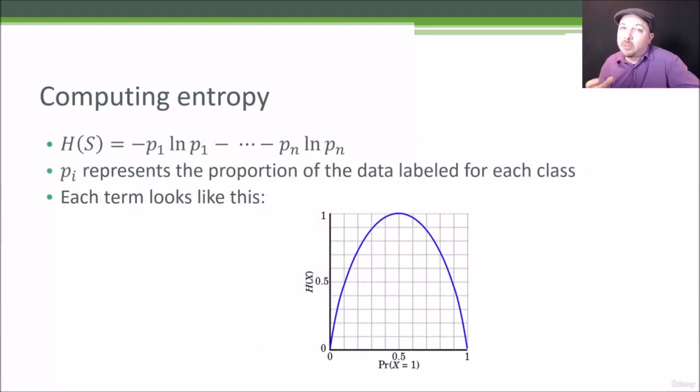Now mathematically, it's a little more involved. When I actually compute a number for entropy, it's computed using this expression here: H(S) = -p₁ ln p₁ - ... - pₙ ln pₙ. For every different class that I have in my data, I'm going to have one of these p terms - p sub 1, p sub 2, and so on through n for n different classes.